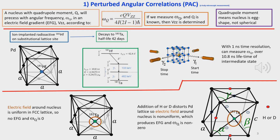We ion-implant a radioactive hafnium-181 onto a substitutional lattice site of palladium, and the hafnium decays to tantalum-181 with a half-life of 42 days. The hafnium beta decays through a gamma cascade, gamma-1 and gamma-2. The intermediate five-half state has a lifetime of 11 nanoseconds and has a quadrupole moment. By placing the sample surrounded by gamma detectors and measuring the timing difference between gamma-1 and gamma-2 with one nanosecond time resolution, we can determine omega. In the lower panel, the electric field around the nucleus is uniform in FCC palladium, so there's no electric field gradient. However, when you add hydrogen or deuterium, it distorts the palladium lattice, producing a non-uniform electric field and thus an electric field gradient, which produces precession.